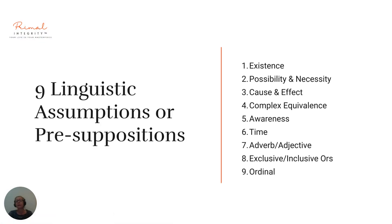In NLP we look at nine different linguistic assumptions or presuppositions. Number one: existence. Number two: possibility and necessity. Number three: cause and effect. Number four: complex equivalents. Number five: awareness. Number six: time. Number seven: adverb or adjective. Number eight: exclusive or inclusive ors. And number nine: ordinal. Be at ease about all the jargon here — a linguistic assumption is merely an idea that is indicated by the words that people use. As for the other words on this page, you will understand them very shortly.